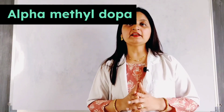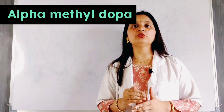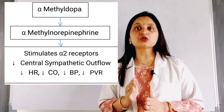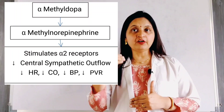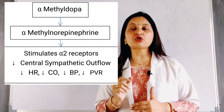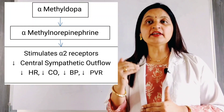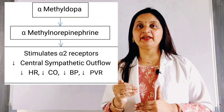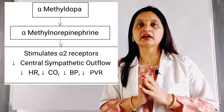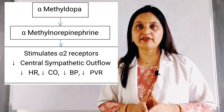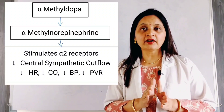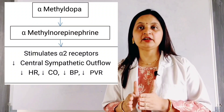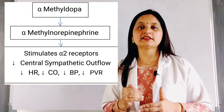The next central sympatholytic drug is alpha-methyldopa. Its mechanism of action is similar to clonidine, except that alpha-methyldopa does not act directly on alpha-2 receptors in the brain. Instead, alpha-methyldopa is a prodrug that gets converted to alpha-methylnorepinephrine, which in turn acts as an agonist on alpha-2 receptors in the brain, decreasing central sympathetic discharge, decreasing epinephrine and norepinephrine release, reducing heart rate and cardiac output, and decreasing peripheral vascular resistance to lower blood pressure.